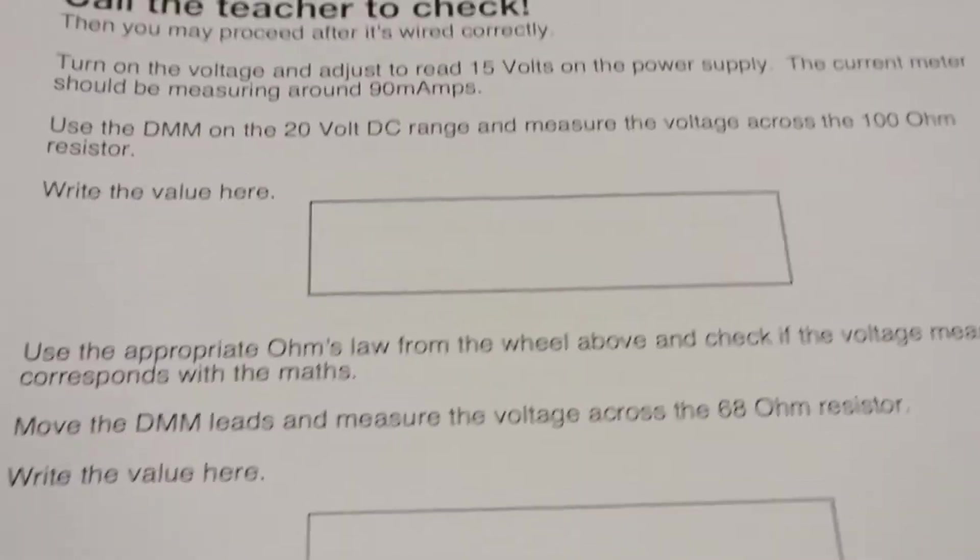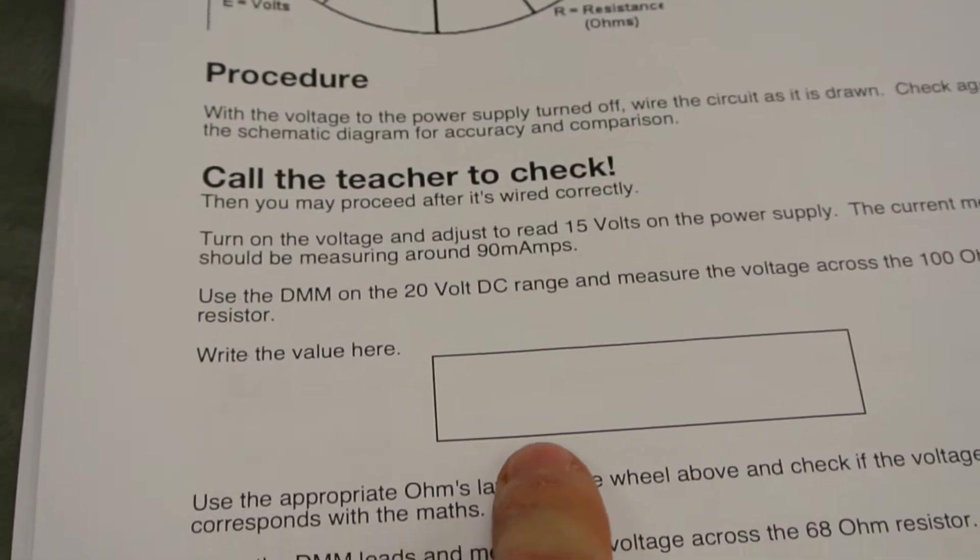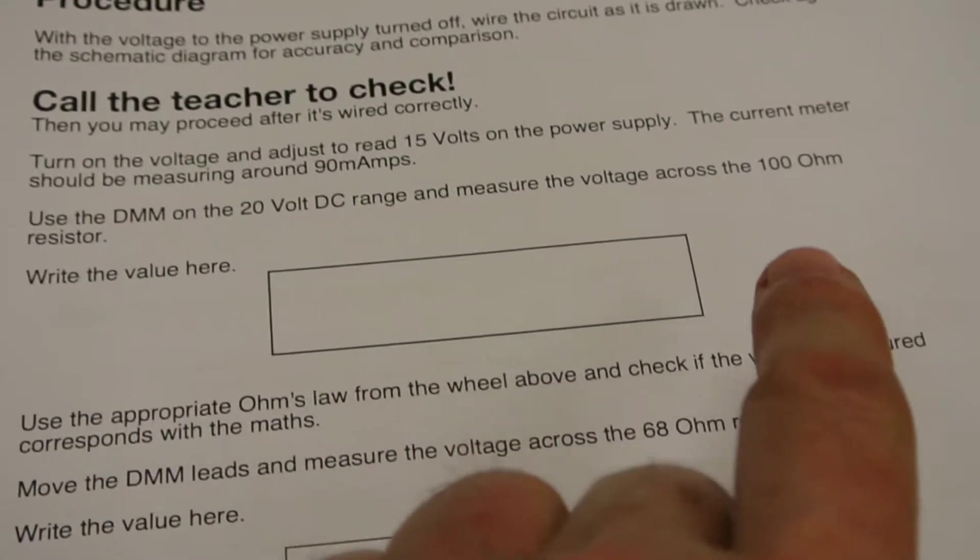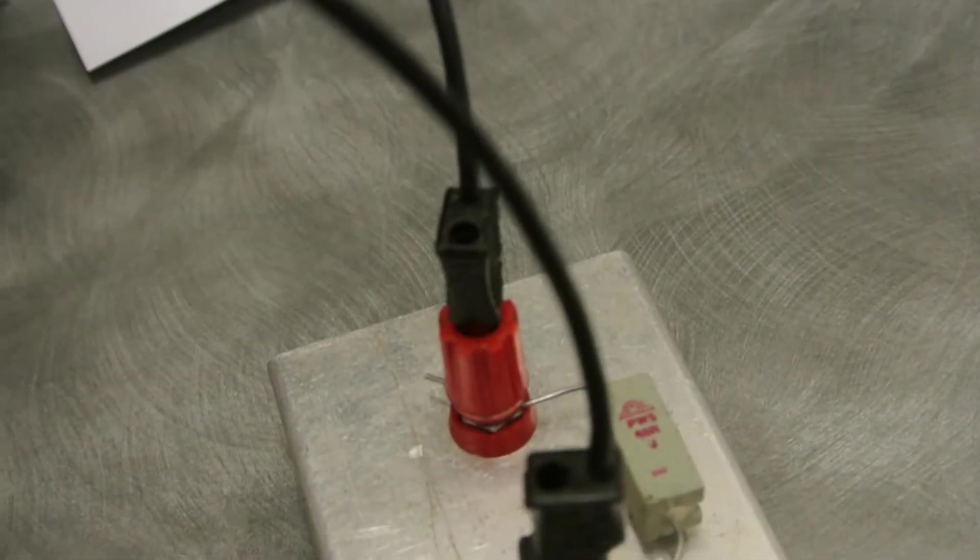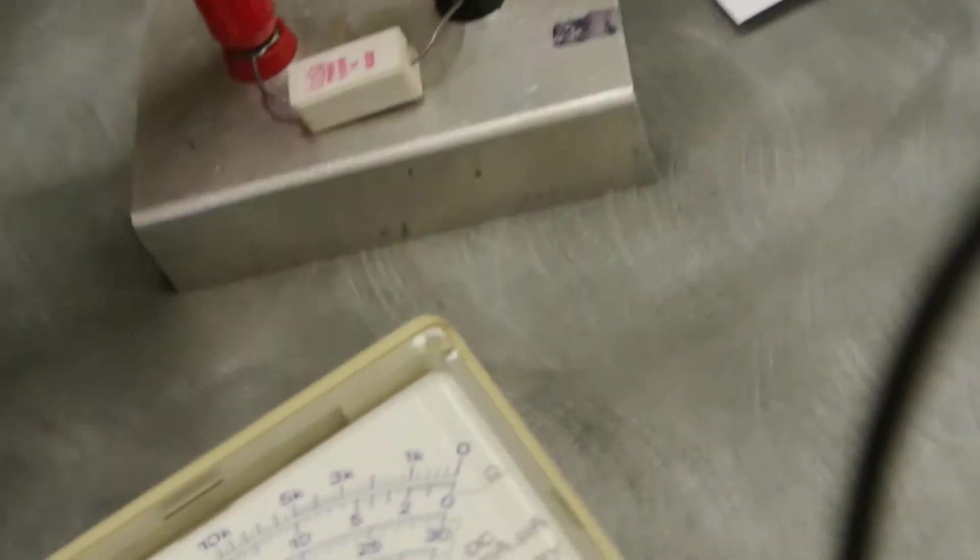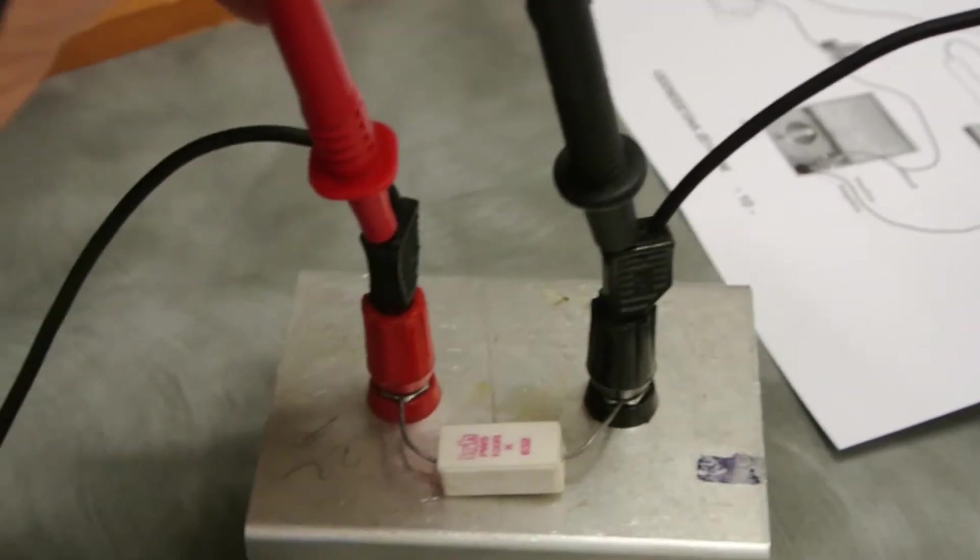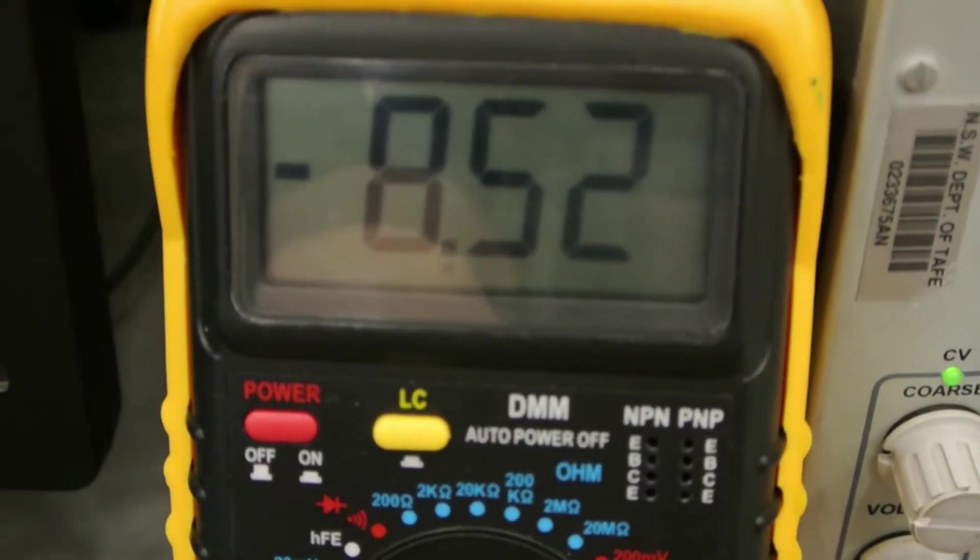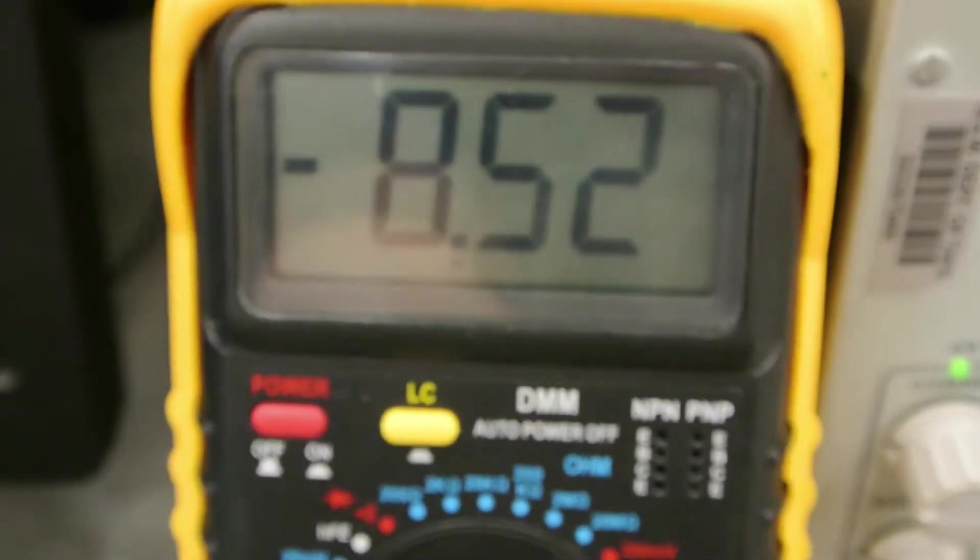The first thing in the lab asks us to measure the voltage across the 100 ohm resistor. So we're going to go ahead and do that. I'll get the multimeter leads and put them into the 100 ohm resistor. Notice on the meter it says 8.52 volts, but it's got a negative sign in front.